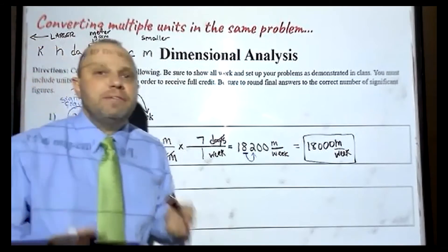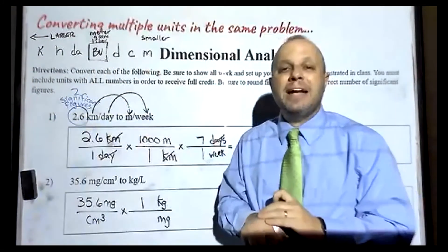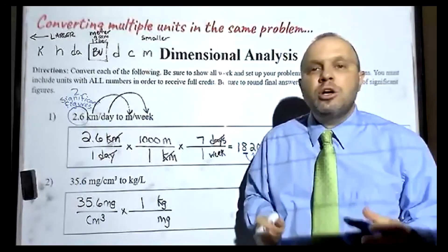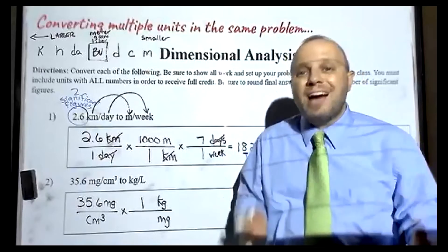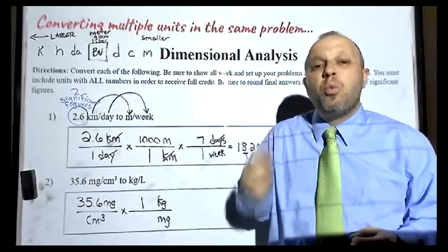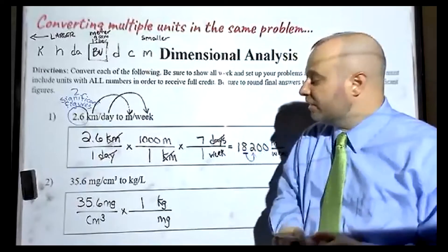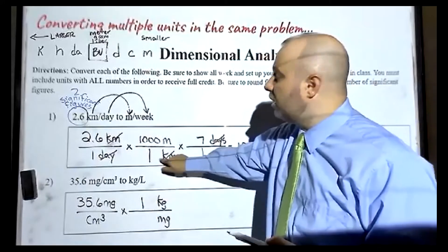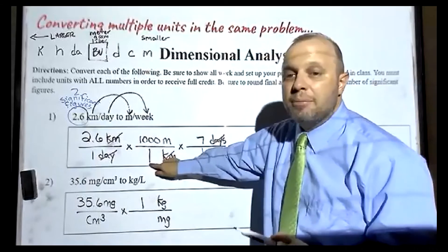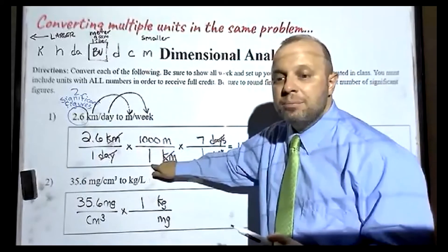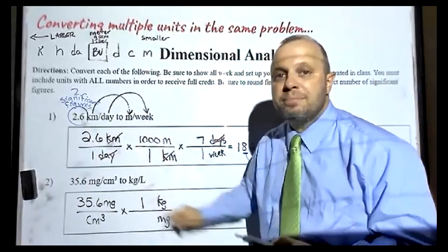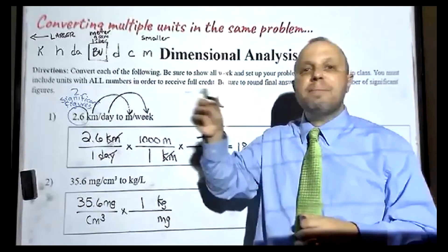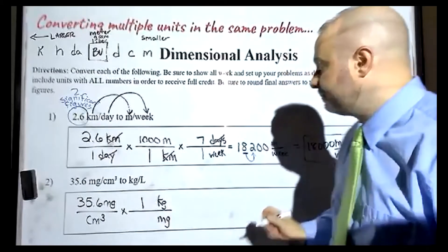I mentioned this in the previous video, but I just want to remind everyone — don't oversimplify the process. It's not that the one goes on the bottom every time, or the one goes on top every time. It's that the one goes with the larger unit. So kilograms is larger, so kilograms gets the one. Up here, kilometers was larger, so kilometers got the one. Notice the one is on the bottom sometimes, the one is on top sometimes. Don't oversimplify it — the one goes with the larger unit.